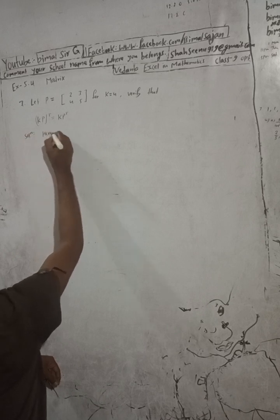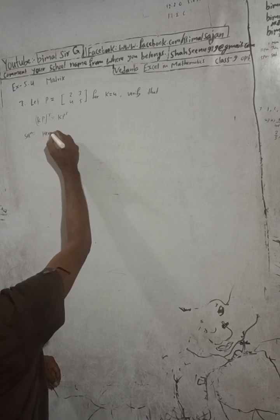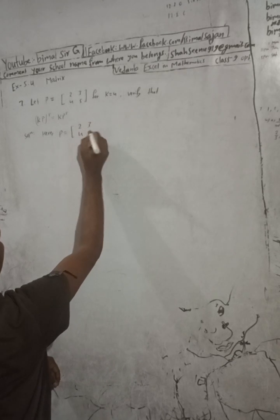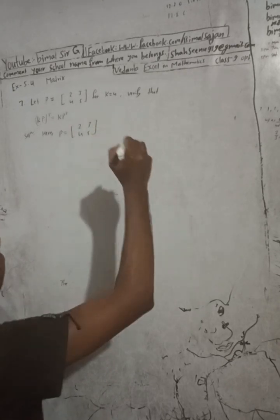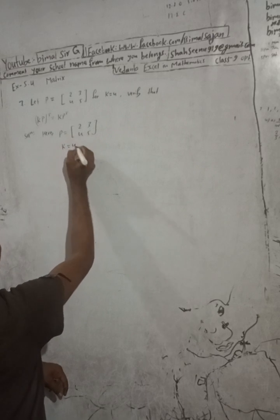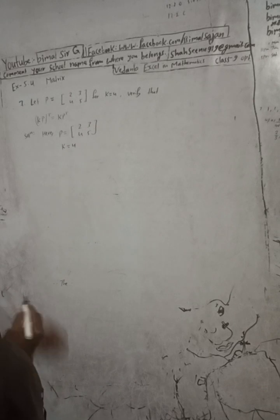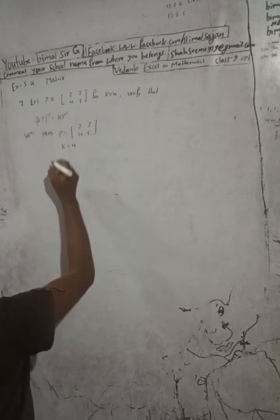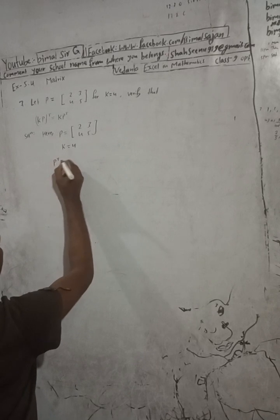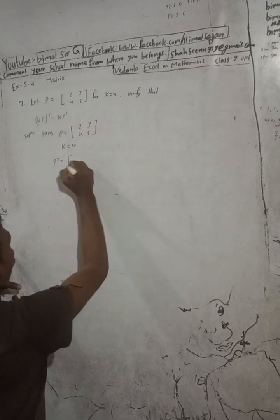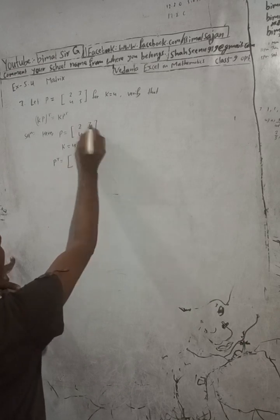Solution: here P is equal to [2, 3; 4, 5] and K is equal to 4. Now we have to verify KP transpose. First I will find P transpose. P transpose means just interchange the rows and columns, so the first row becomes the first column: 2, 3.